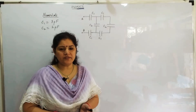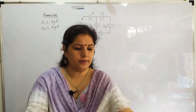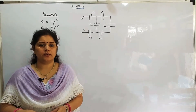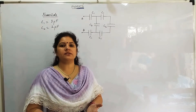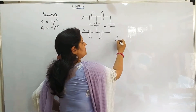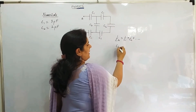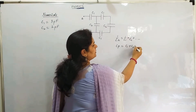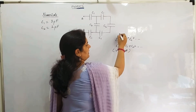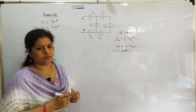Yesterday we studied about capacitance in series and capacitance in parallel. We learnt that in capacitance in series, the charge Q remains the same, and in capacitance in parallel, the potential remains the same. Capacitance in series is given by 1/Cs = 1/C1 + 1/C2 and so on. Capacitance in parallel is given by C1 + C2 + C3 and so on. Here V remains constant, and here charge Q remains constant. We have also learnt the derivations of both.